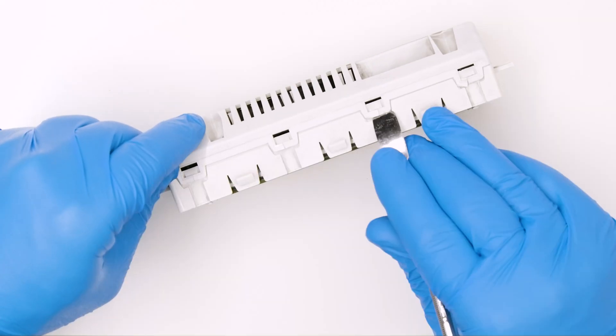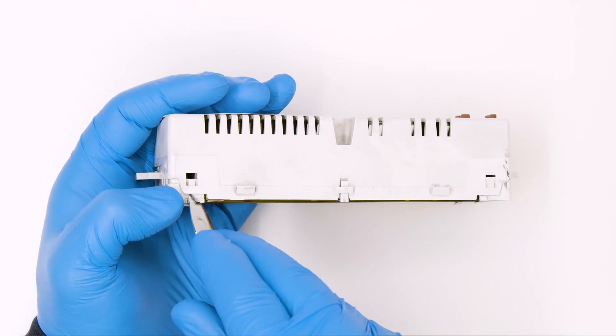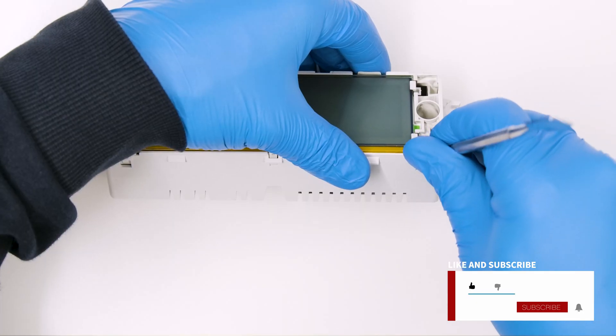Position the module as shown and with the head of the spudger leverage on the plastic clips to remove the rear cover.